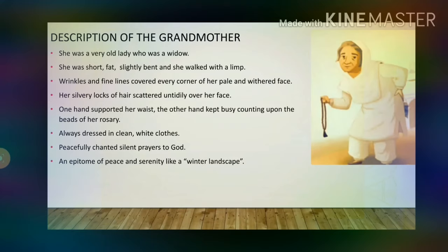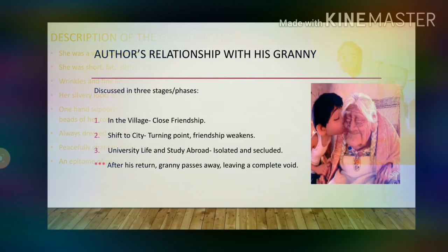In the first paragraph, the author provides a brief description of his grandmother. He presents her as a very old lady who was a widow. She was not physically attractive — was short, fat and slightly bent, and she walked with a limp. Wrinkles and fine lines covered the best part of her face, and her silvery locks scattered untidily over her face. One hand supported her waist whereas the other kept busy counting the beads of a rosary. She was always dressed in white clean clothes and was practically a very peaceful lady.